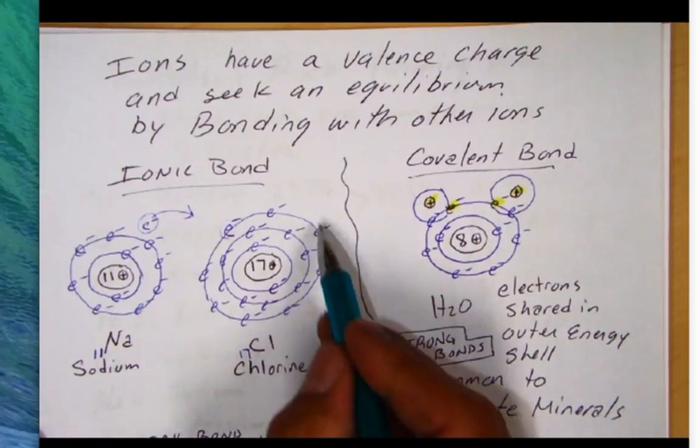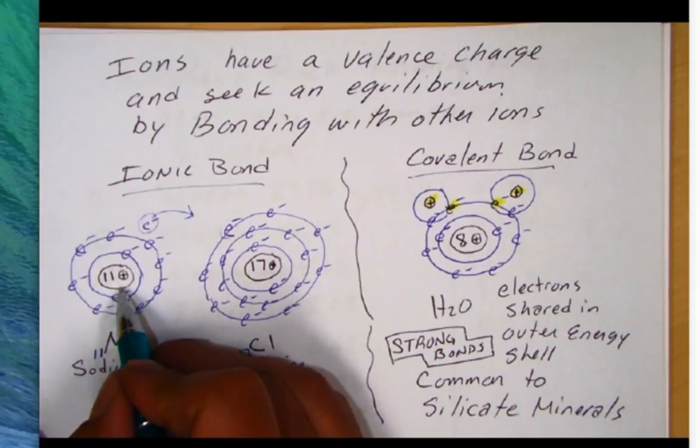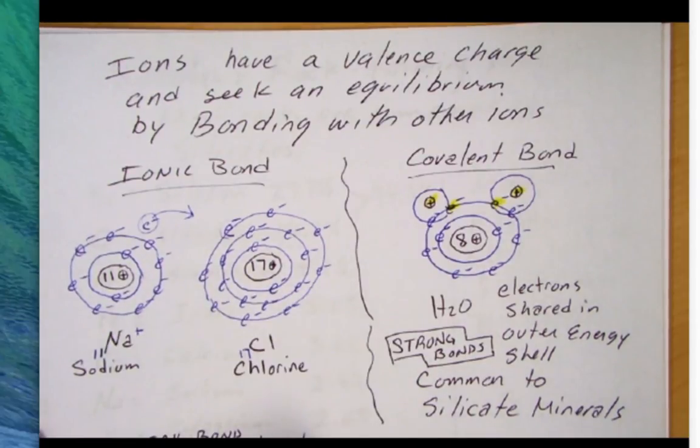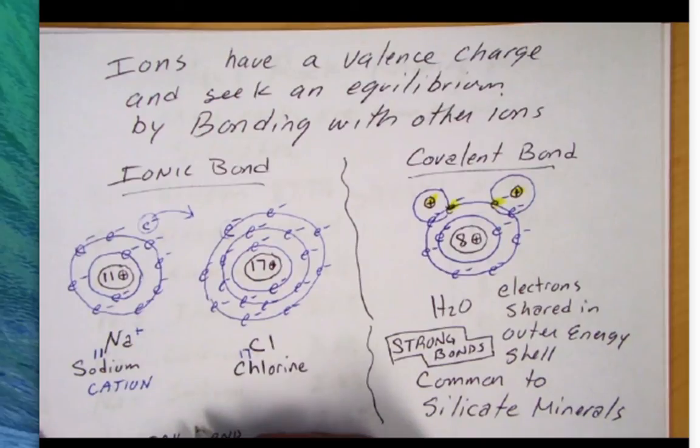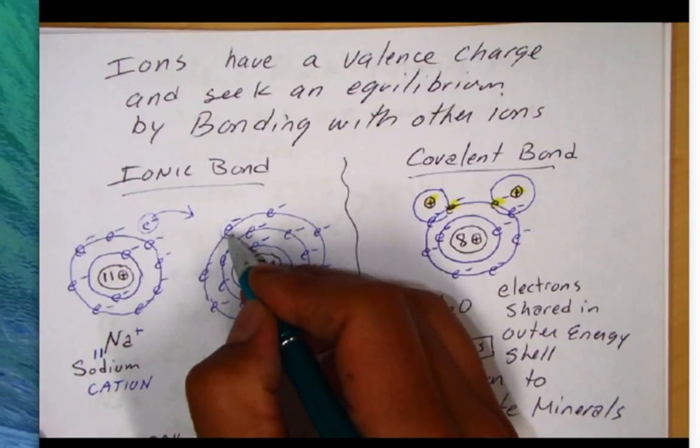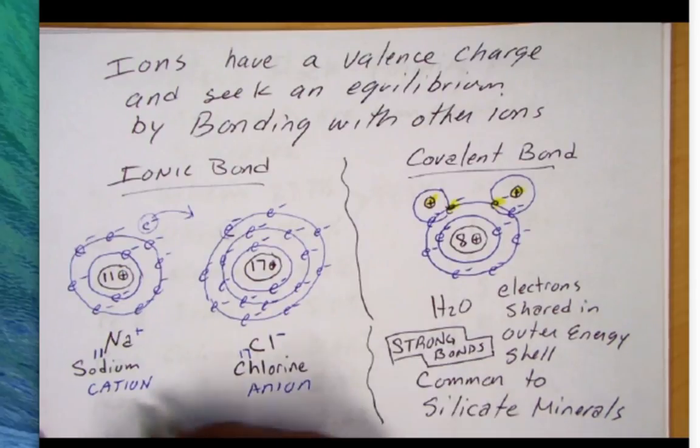Since sodium lost an electron, it didn't lose any protons, it's going to have a positive charge. And we call this a cation. Those ions that lose electrons are called cations. Now chlorine gained an electron, so it's going to have a negative charge. And we often call these anions. So there's anions and cations.